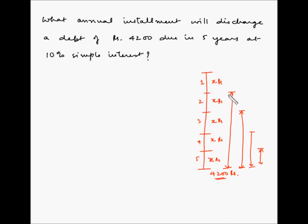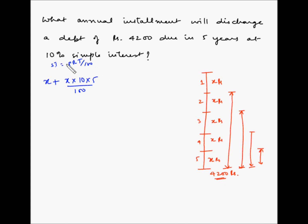Let's put an equation for this. At the end of the first year, suppose you paid back rupees X. The bank gains interest on X for the remainder of 4 years. So the amount actually paid is X plus (X × 10 × 4) / 100. Note: the time should be 4 years, not 5, since the interest on the first installment applies to the remaining 4 years. We use the formula: simple interest = PRT / 100.